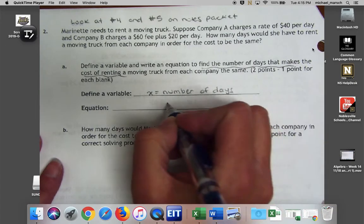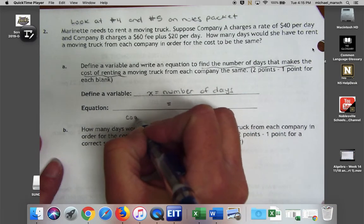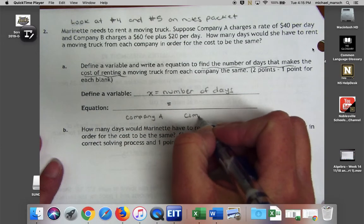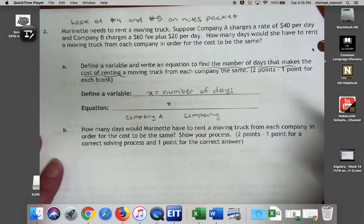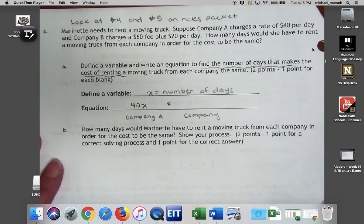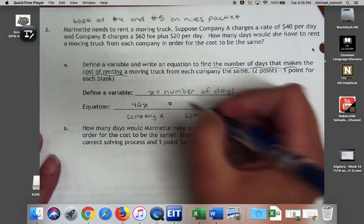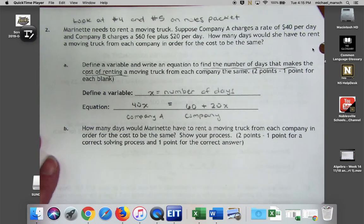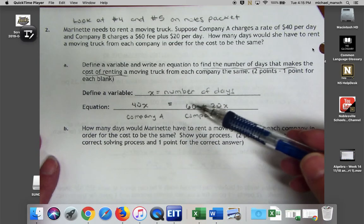Right, and we want them to be the same, so this is where we set up a Company A situation and a Company B situation. For Company A, we know it's $40 per day, so that's going to be 40x. And for Company B, we know it's $60 plus $20 a day, so less per day, but there's a $60 upfront fee.